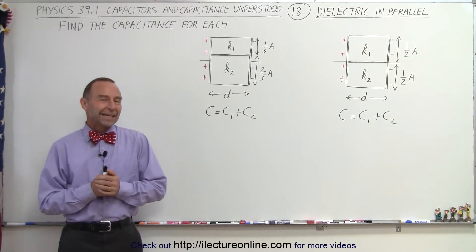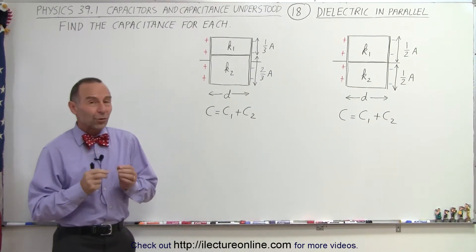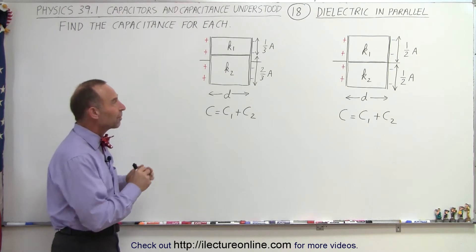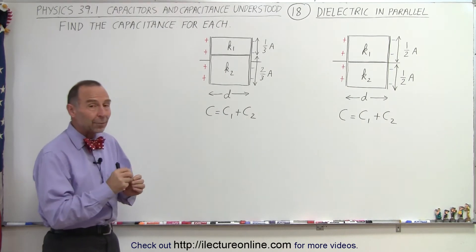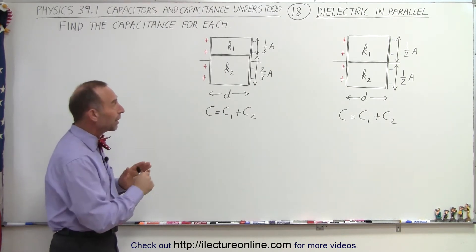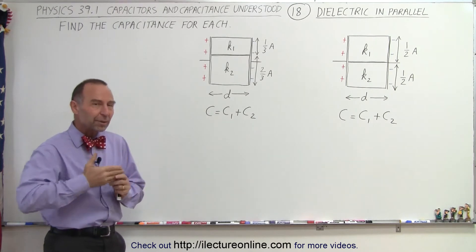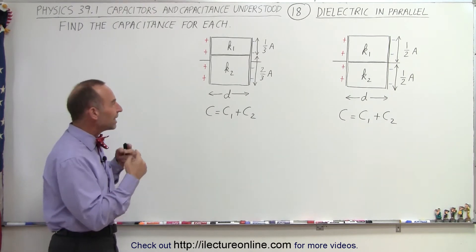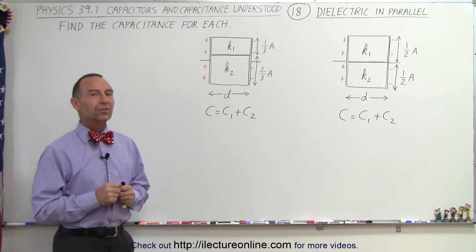Welcome to ElectronLine. In these two examples here we're trying to find the capacitance of each capacitor noting that we have some dielectric between the plates but not a continuous piece of dielectric, two different pieces each with their own dielectric constant.